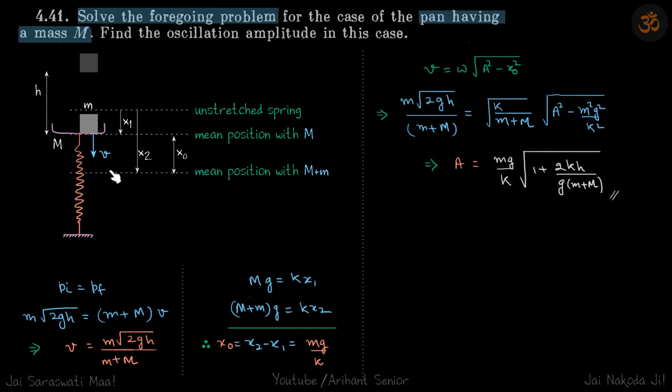x₀ is the position of the particle when it strikes from the new mean position. So if this is x₂ and this is x₁, then x₀ will be x₂ minus x₁. Let's find the values of x₁ and x₂ so we can find x₀ and use this equation.